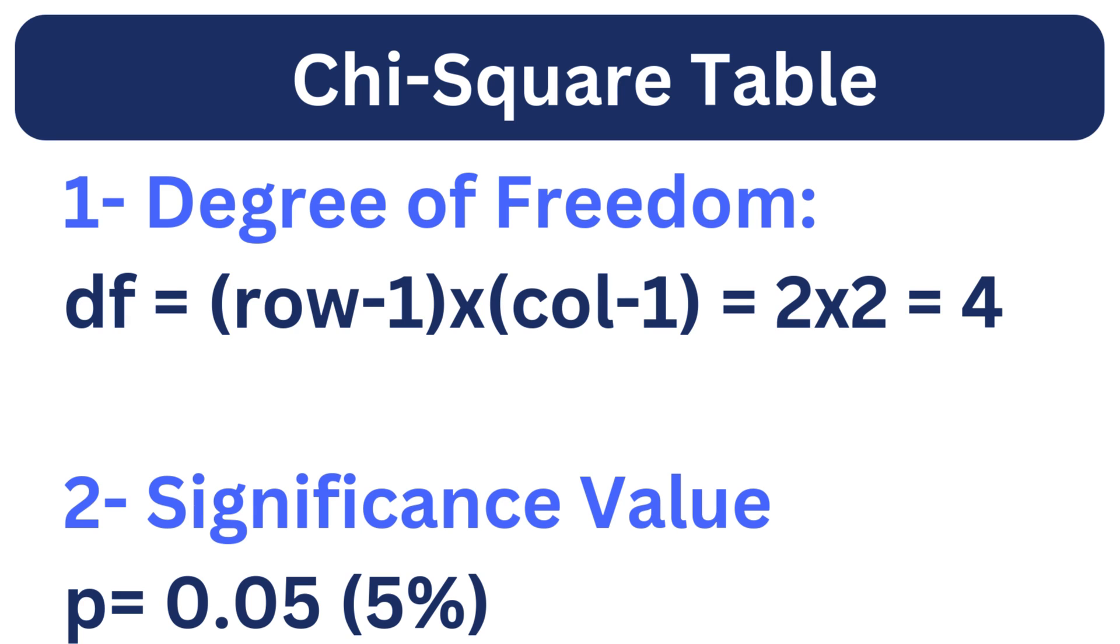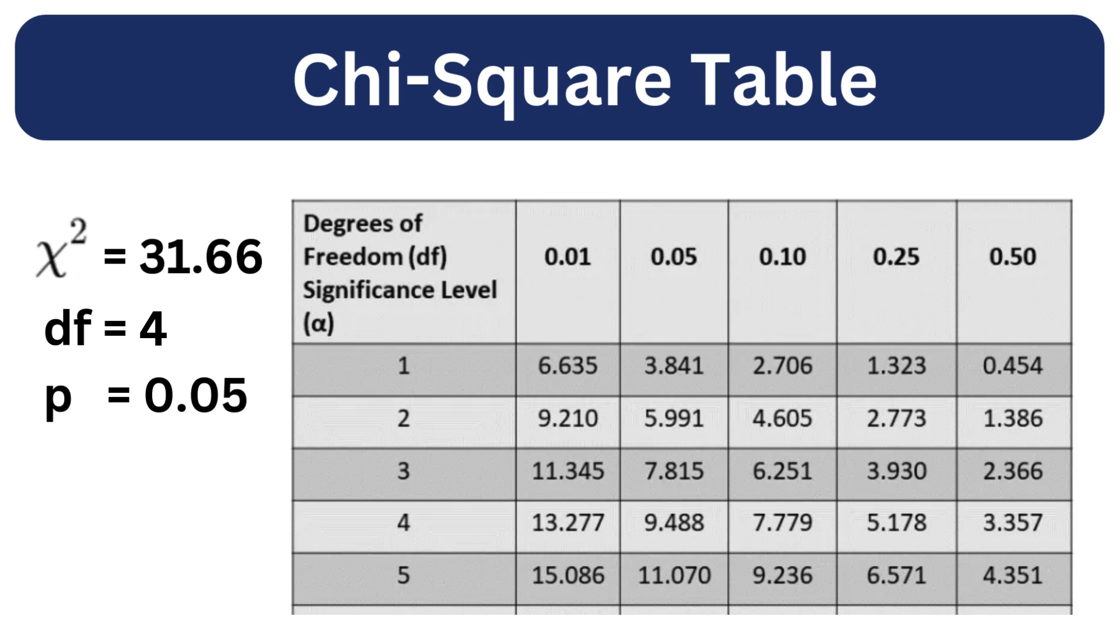The significance level is typically considered to be 5%, that is 0.05. Now let's match these values in our table.